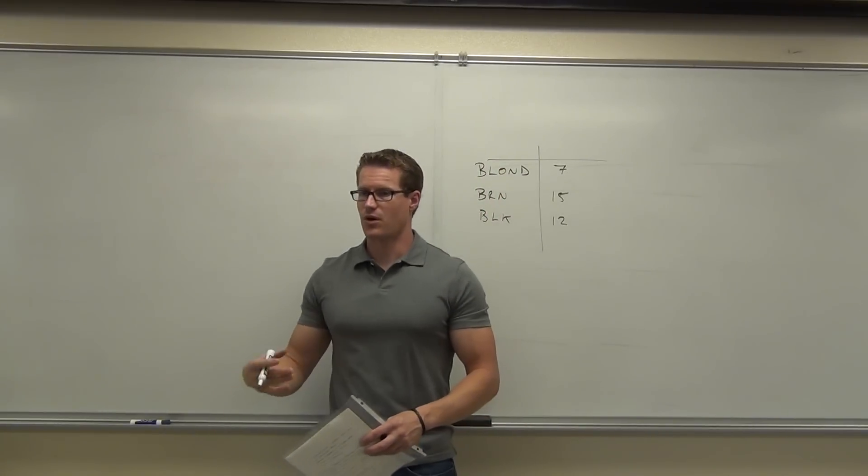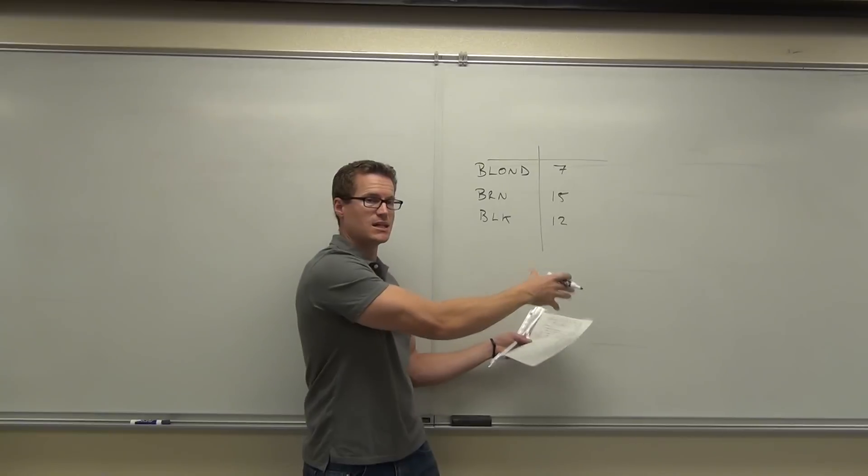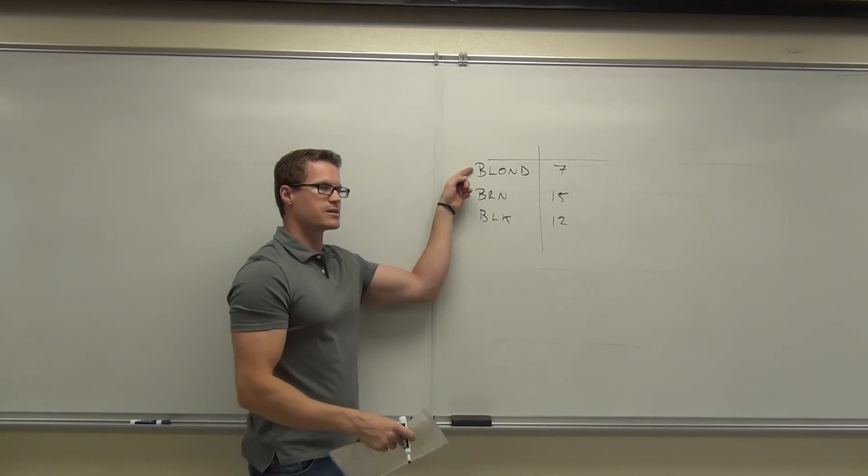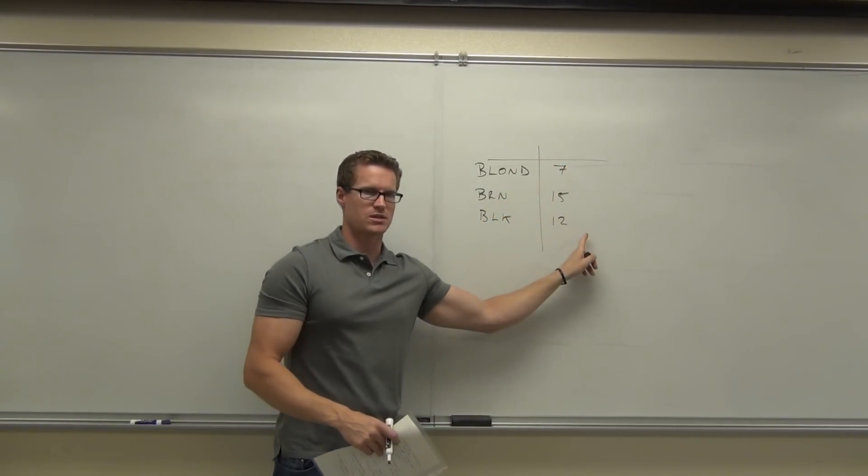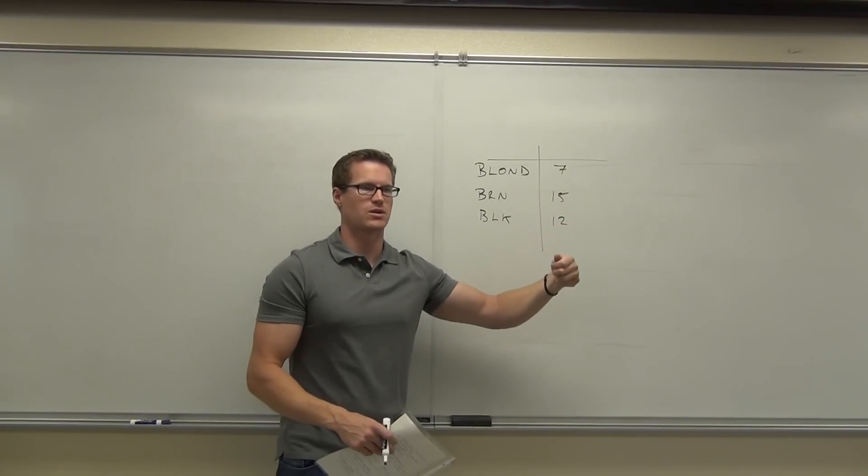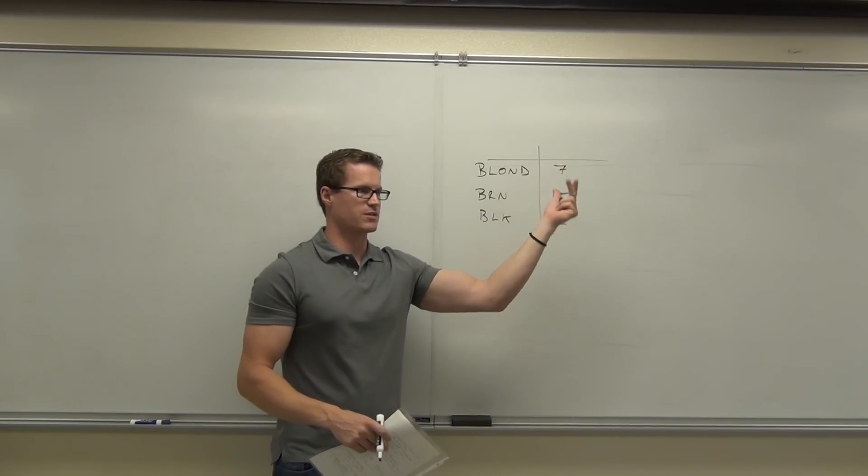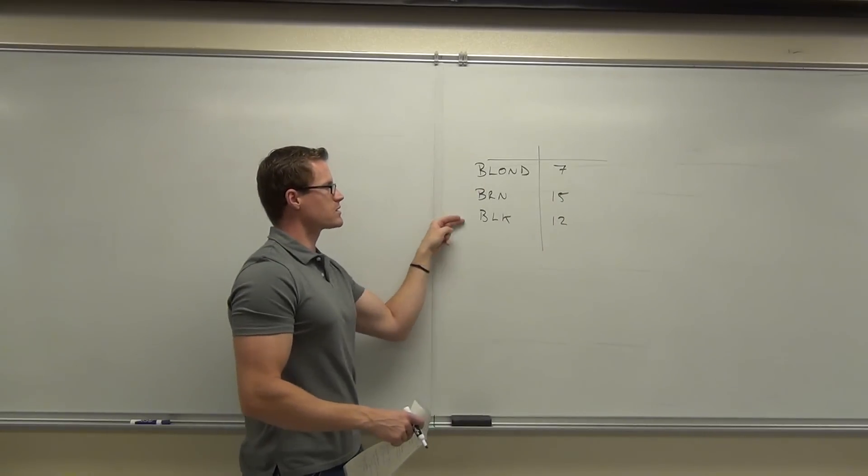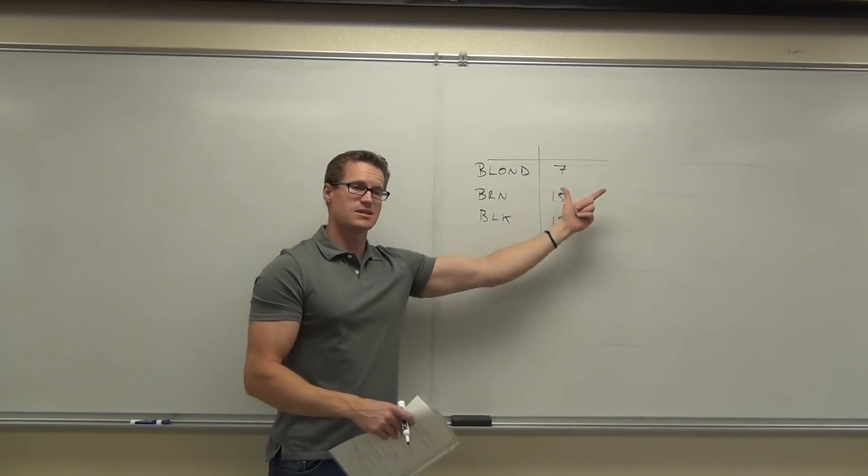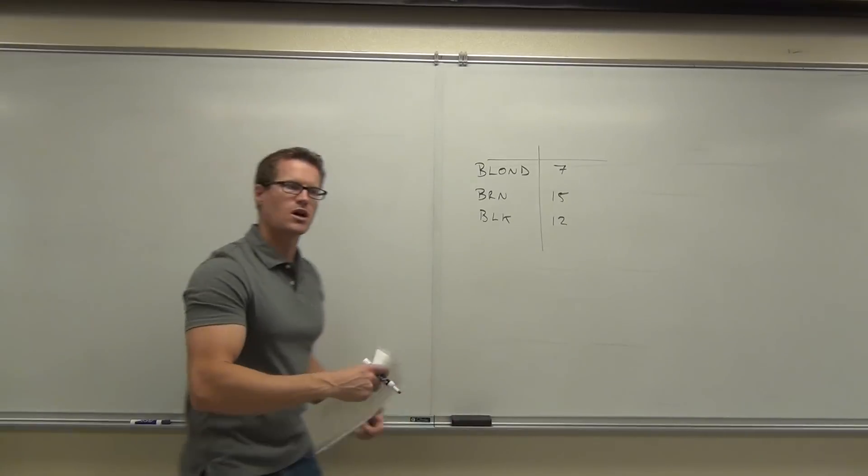We're going to make it a little more specific for our reasoning, but this is the idea. You have what are called classes, just groups, and you have counts, frequencies. A frequency is how often something occurs. Seven blonde people occurred seven times. Brown-haired people 15 times. So these are our classes and these are our frequencies. This is a frequency distribution.